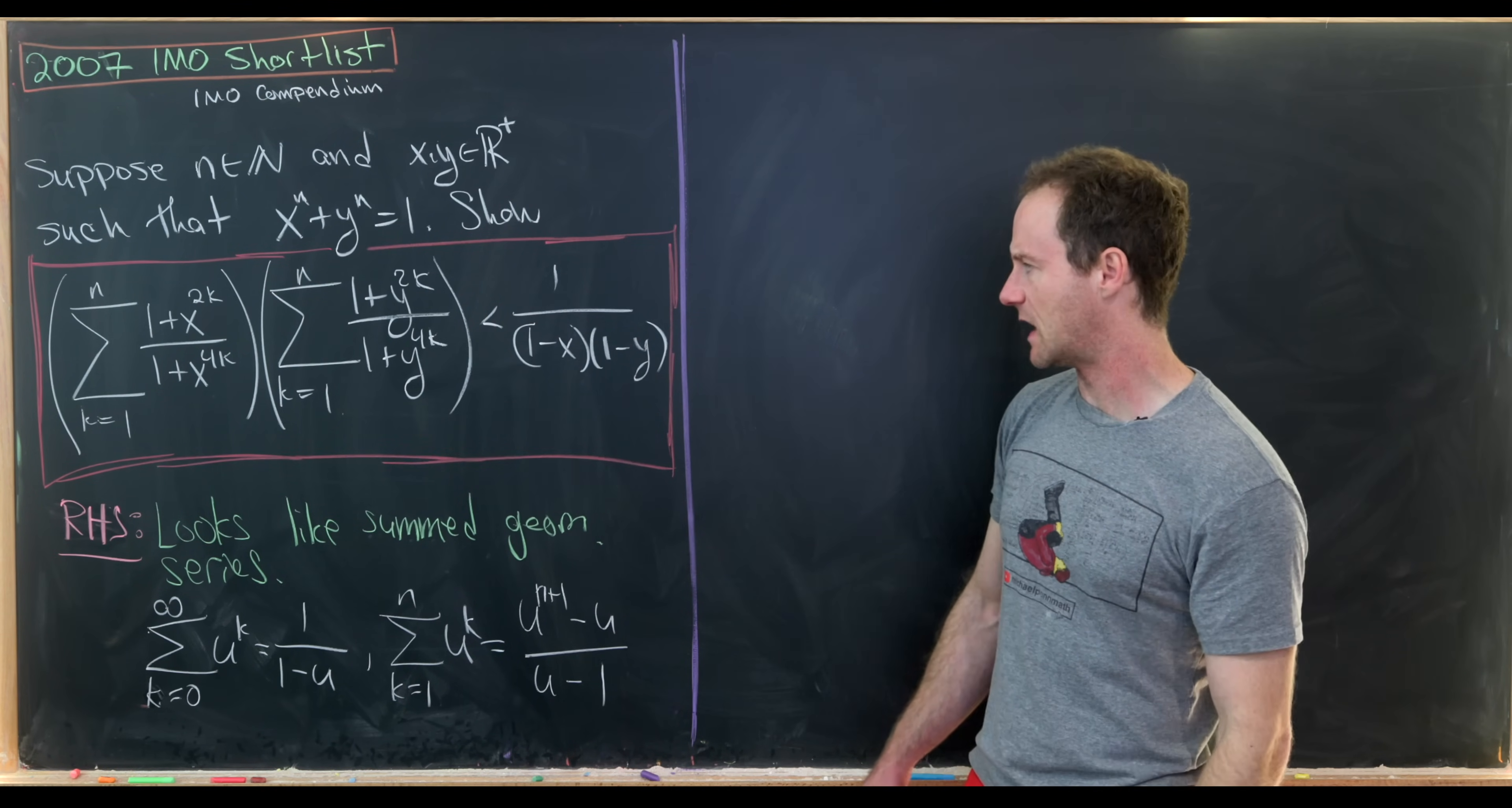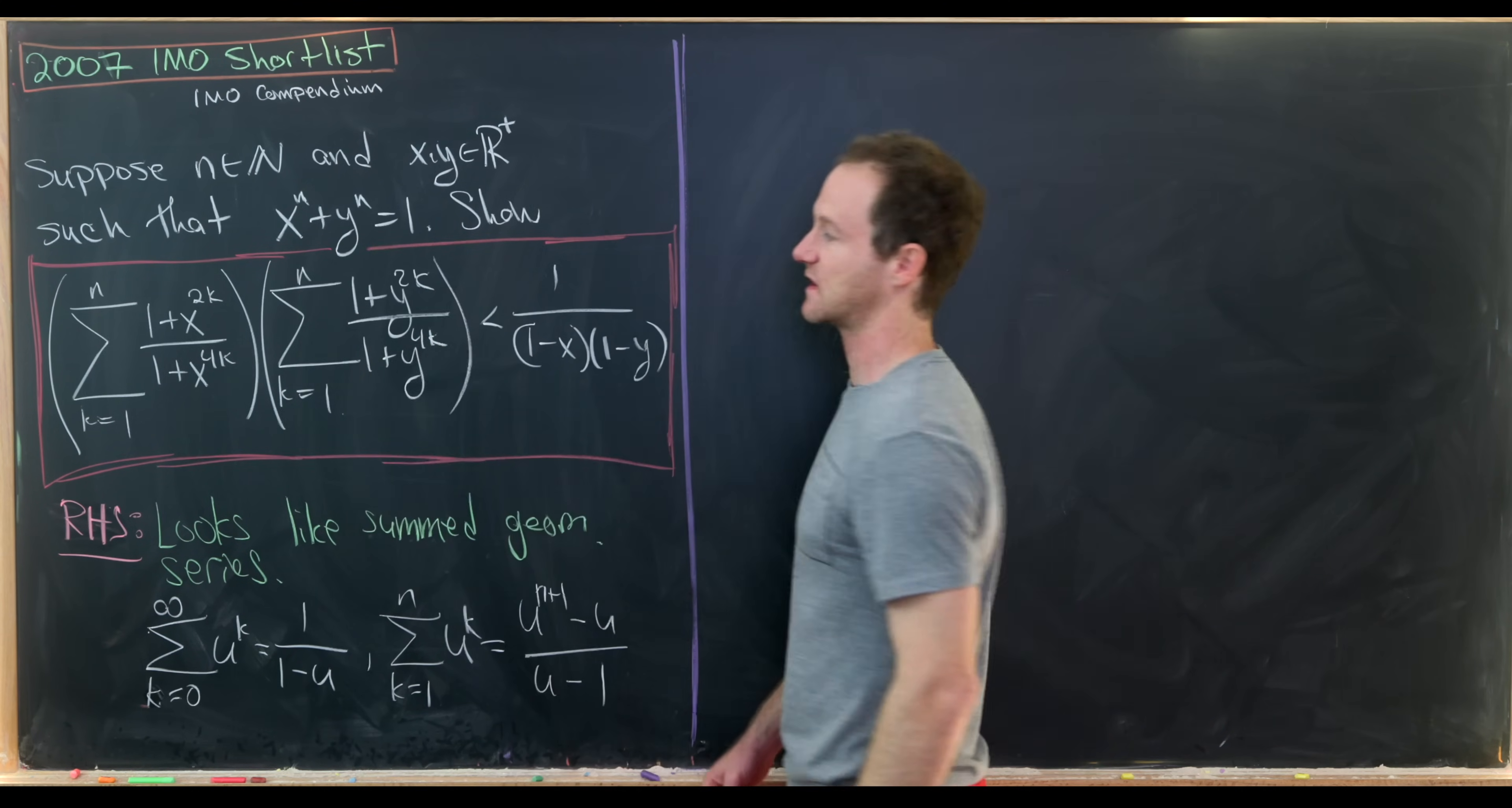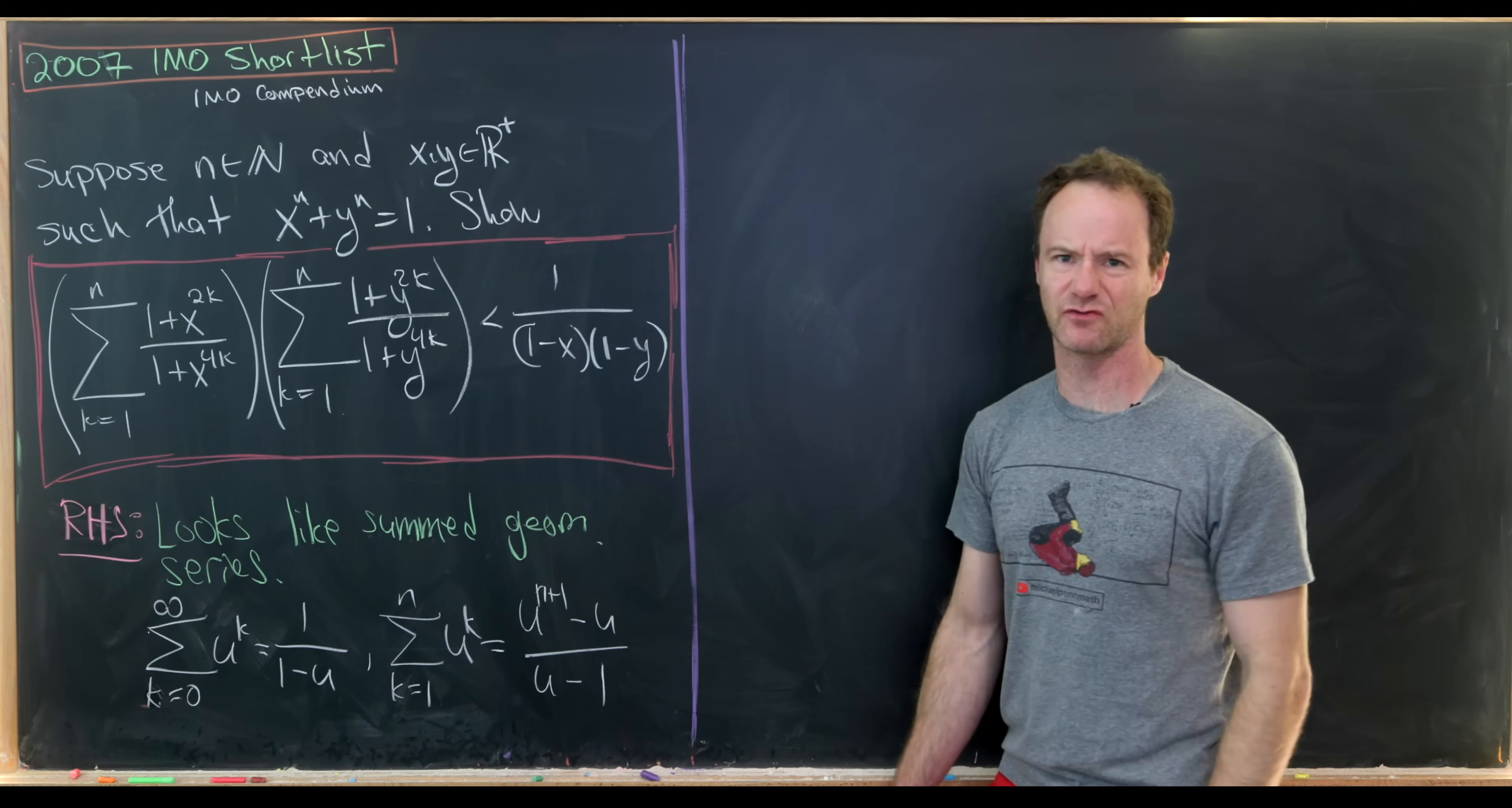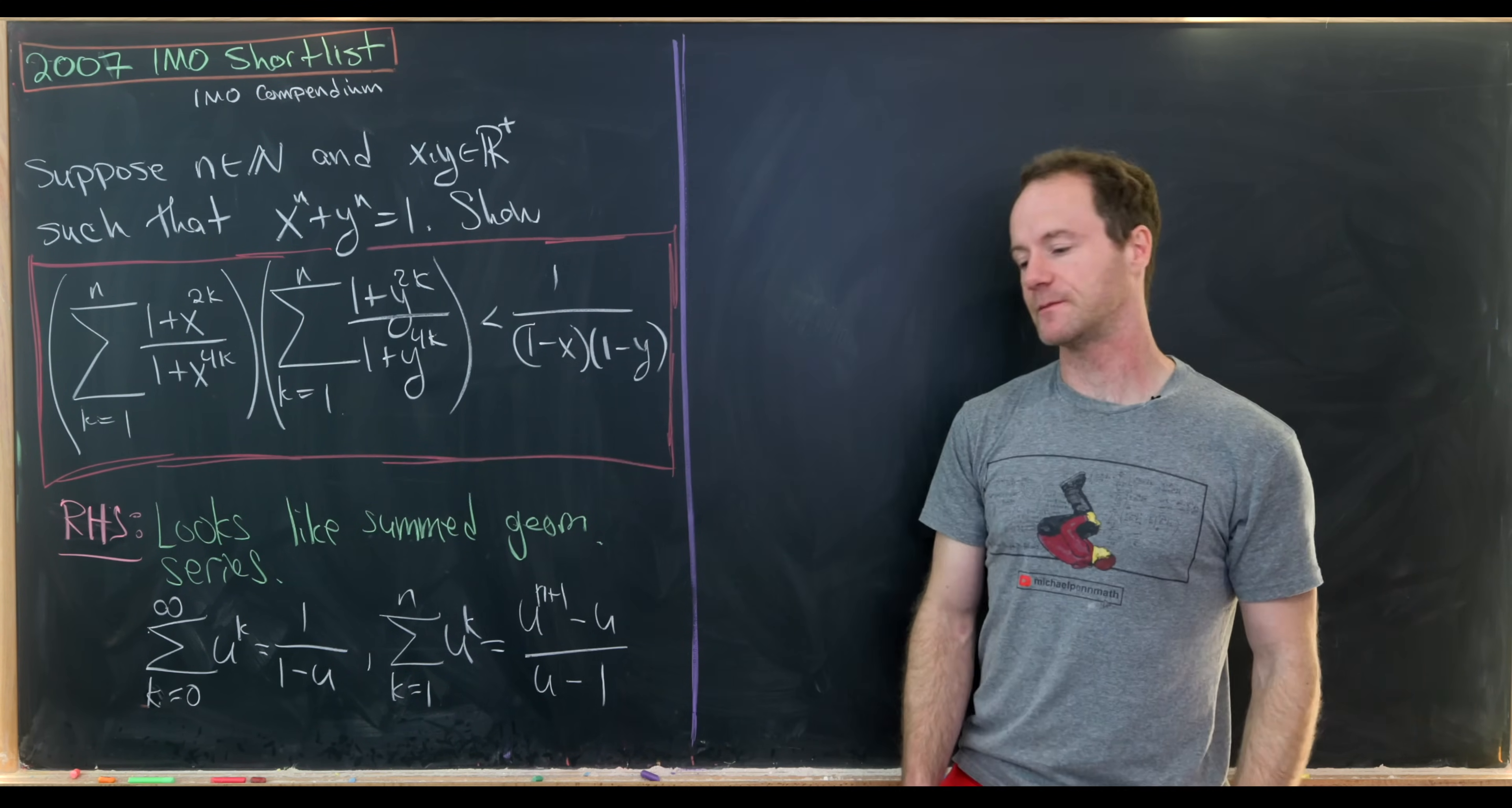Okay, so keeping that in mind, along with the fact that we've got this sum geometric series over here, perhaps we want to build a tool so that these objects on the left-hand side look like geometric series instead of this crazy sum of these rational expressions. And of course, we don't have to keep equality here. We can use an inequality.